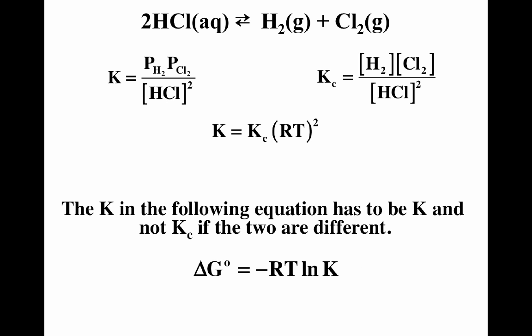In the equation delta G equals negative RT natural log K, that K is the thermodynamic K — the one in terms of activities — and it is not K sub C. We showed that K and K sub C are not necessarily the same numerical value, so you have to make sure you use the thermodynamic K and not K sub C in this equation. Also remember that whatever you take the natural log of has to be unitless.